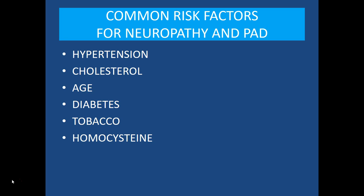When we work up patients for vascular disease, in addition to a basic medical history and physical examination, we look at the comorbid conditions present — coronary disease, carotid artery disease, renal disease, hypertension, and elevated cholesterol. If you study neuropathic disease, you find that the incidence of neuropathy is increased in these same patients with the same comorbid conditions. Hypertension, dyslipidemia, increasing age, tobacco use, diabetes, and hyperhomocystinemia are factors associated with increased risk of both vascular disease and peripheral neuropathy.